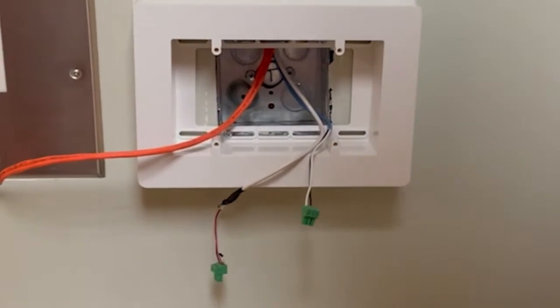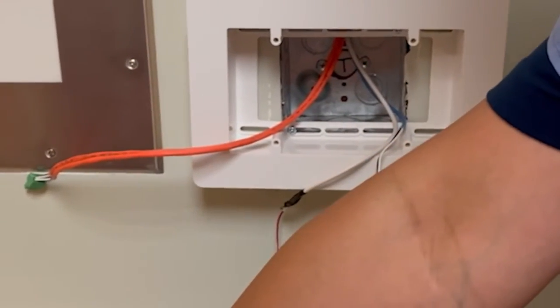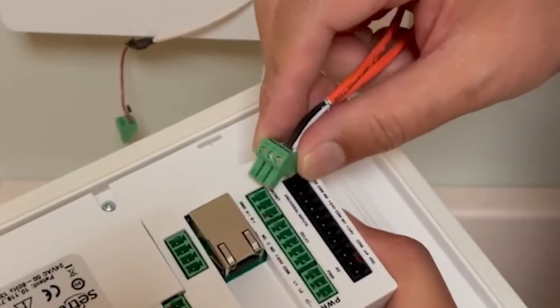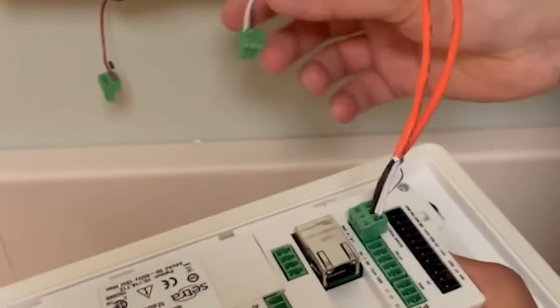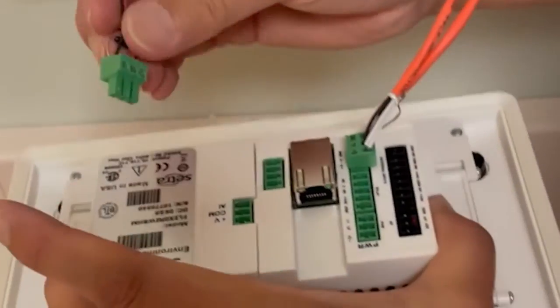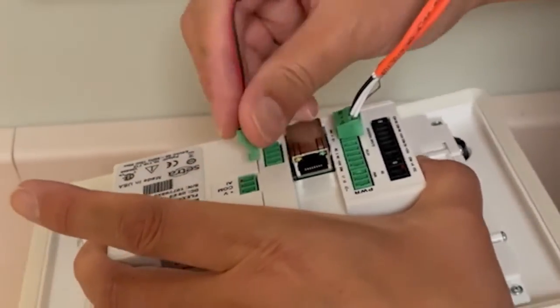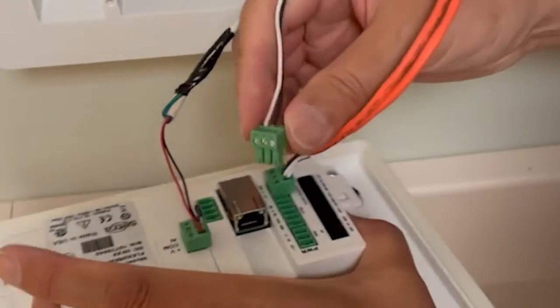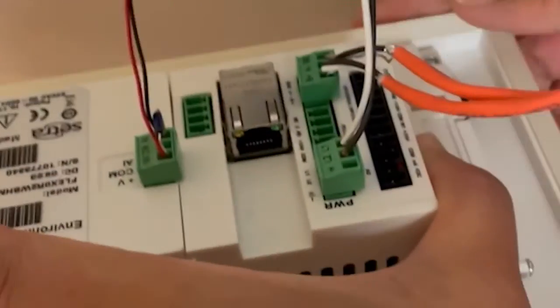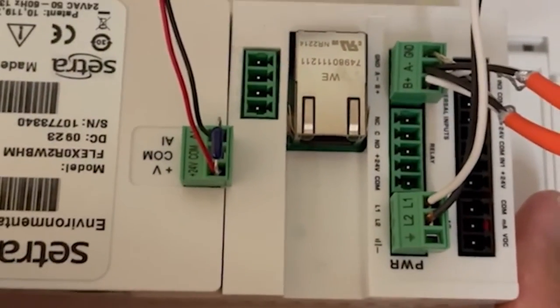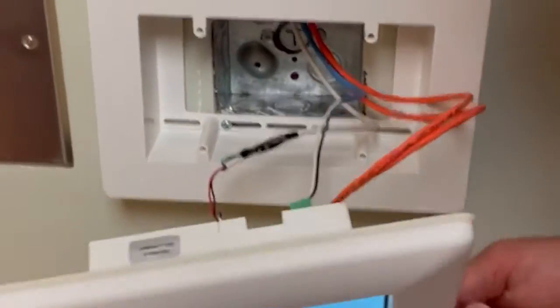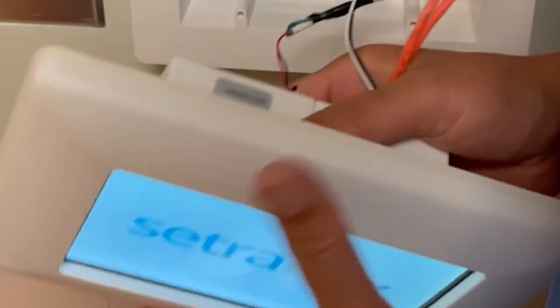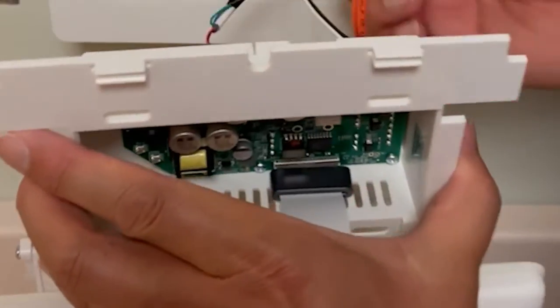Now we're going to actually install our monitor. We're going to use our quick disconnect connectors and plug them into the back in the appropriate locations. There's the MSTP, then our analog input. We always do the power last just in case there's something wrong. After that, we tuck our wires back in the wall.